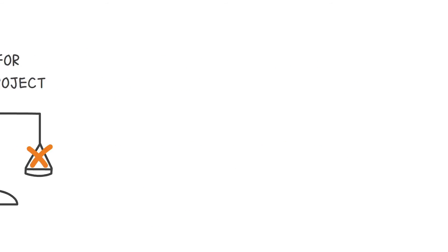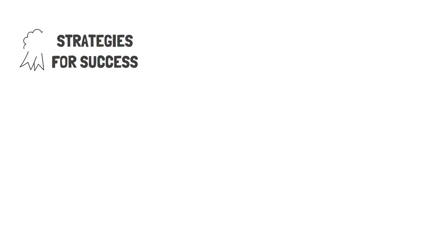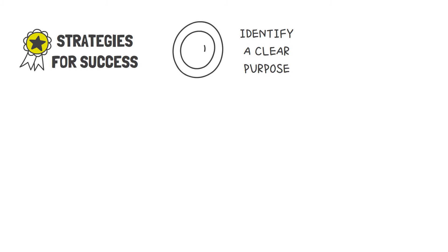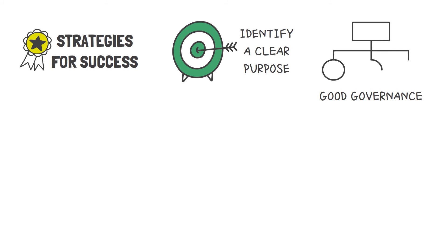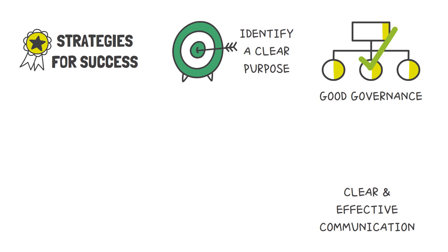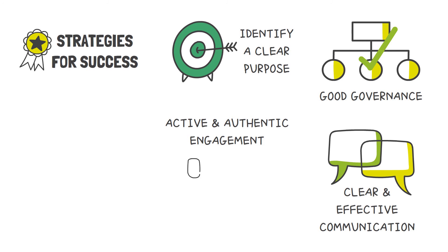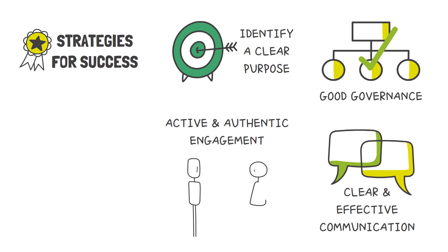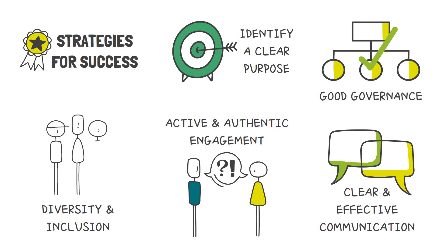To get the most out of citizen science projects, some key strategies for success include identifying a clear purpose for engagement, establishing good governance, clear and effective communication, promoting active and authentic engagement, and ensuring diversity and inclusivity.